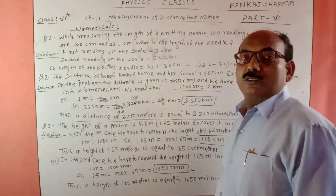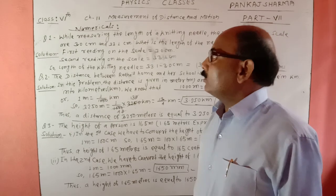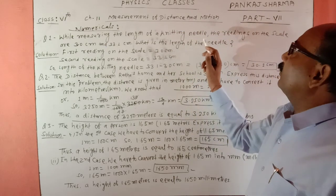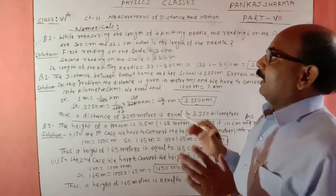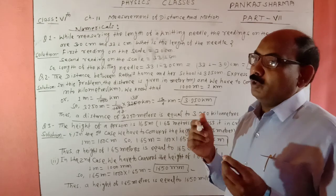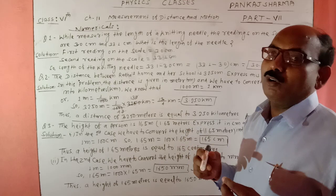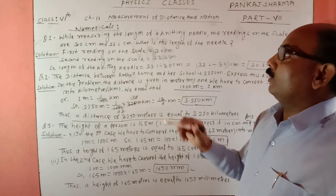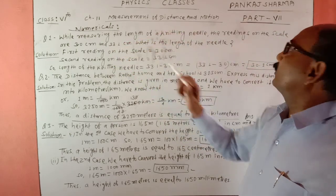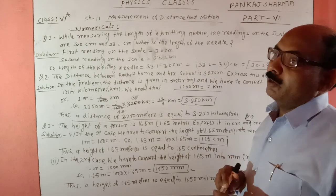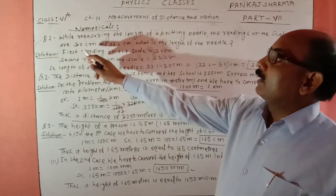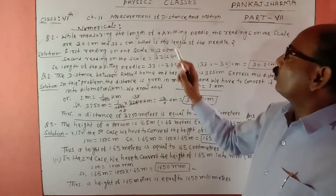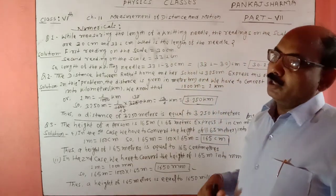Number 1: While measuring the length of a knitting needle, the reading on the scale are 3.0 cm and 33.1 cm. अगर scale पर readings 3.0 cm और 33.1 cm है, तो what is the length of the needle? निडिल की लंबाई क्या है?